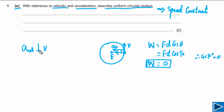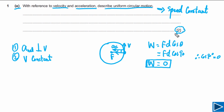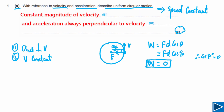So the two key points to write in your answer are: first, the magnitude of velocity is constant — this earns one B mark; and second, the acceleration is always perpendicular to the velocity — this earns the second B mark.